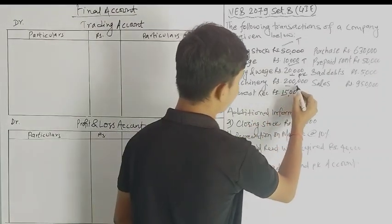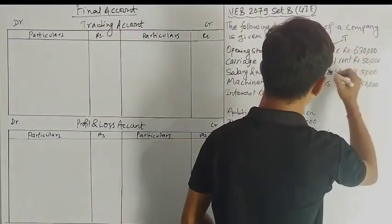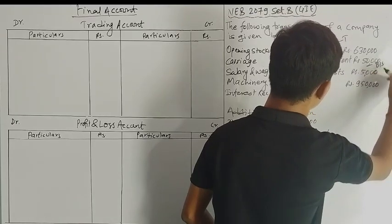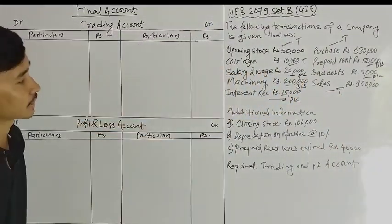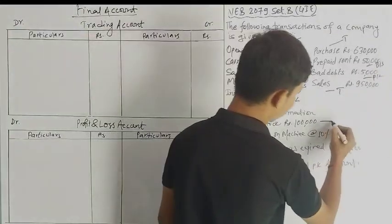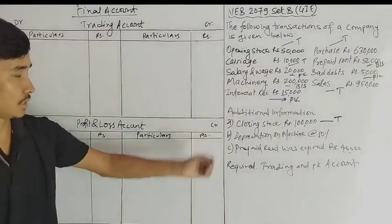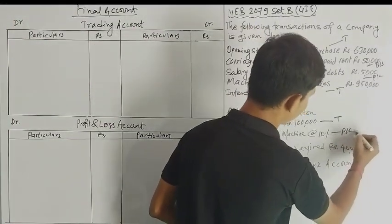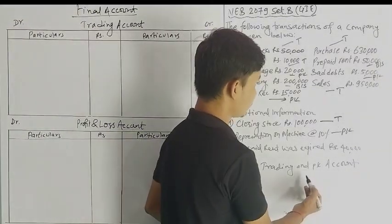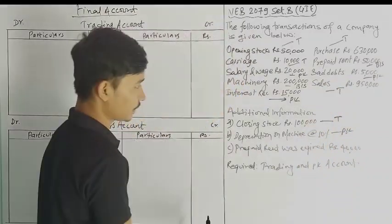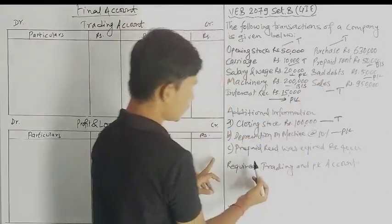This is the machinery balance sheet, and the interest receipt is the income of the P&L account. Purchase goes to trading. This is the prepaid insurance expired, which goes to balance sheet. Bad debt goes to P&L. This is the sales stock. Prepaid rent was expired, goes to P&L account.